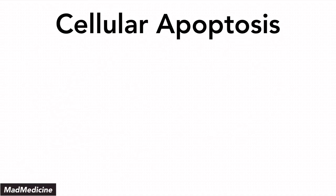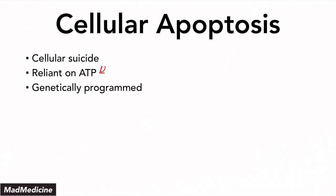The second mechanism is cellular apoptosis. Cellular necrosis was on a macro scale, but cellular apoptosis is on a smaller scale — it's essentially cellular suicide, and it is reliant on ATP. Cellular apoptosis is programmed cell death, and how is it programmed? Through genetics. That is how a cell knows it is going to die — it is already pre-programmed if something is not right with the cell's cell cycle.